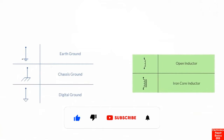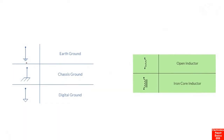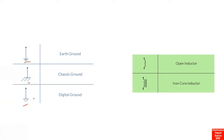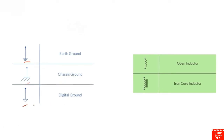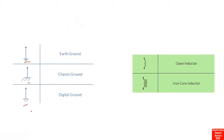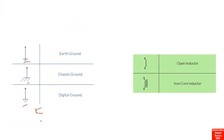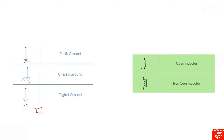Now let's look at ground symbols. We have three kinds of ground: the first is earth ground or analog ground, the second is chassis ground, and the third is digital ground. We mainly find digital ground in motherboards such as laptop motherboards, mobile phone motherboards, and small electronic boards.